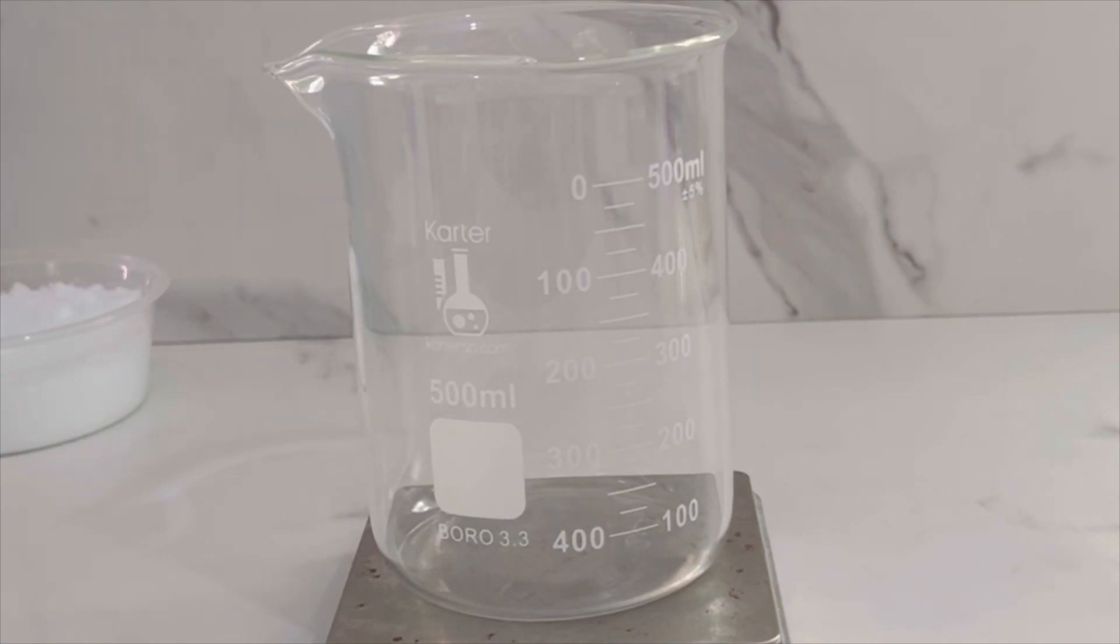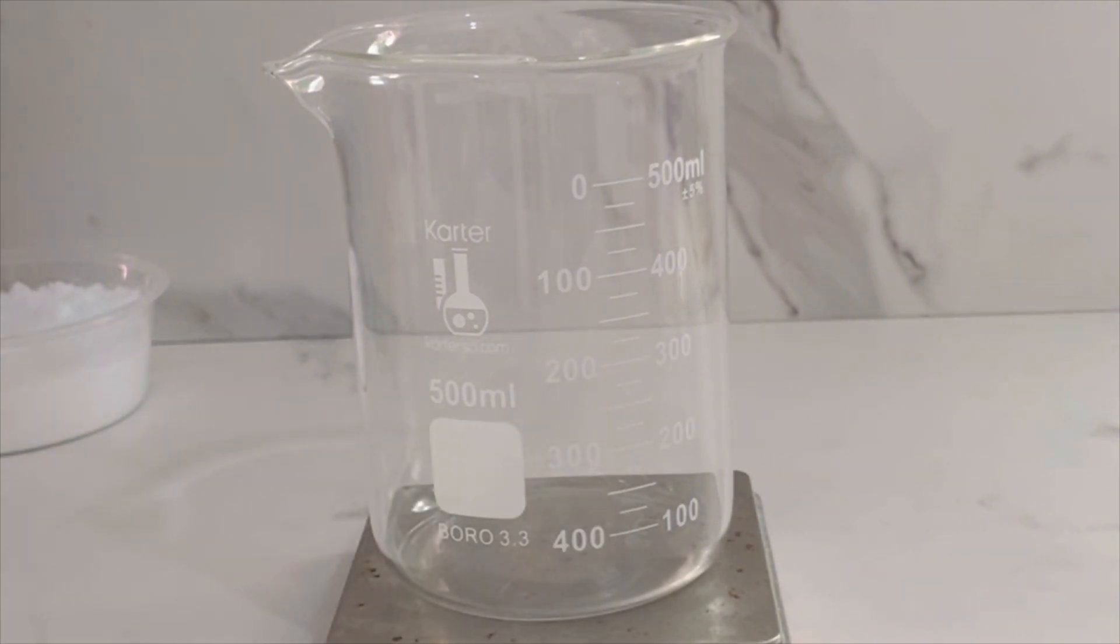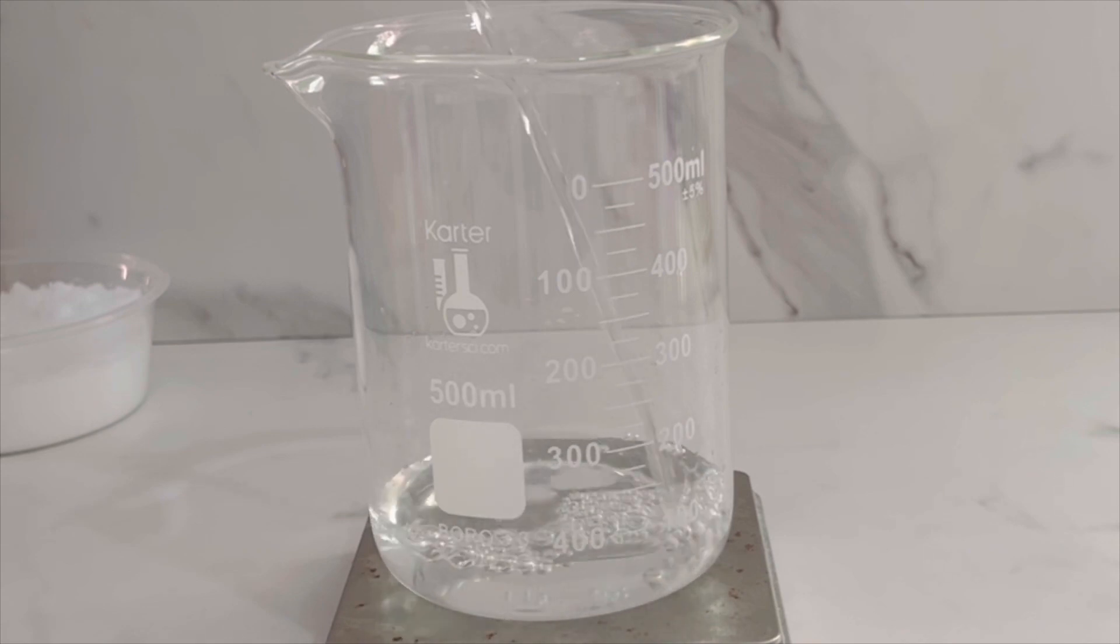So the first thing I'm going to do is work on my water amount, and this is distilled water. I'm doing a 10% pH buffer solution, so I will need 90% or 90 grams of distilled water, and this is what I'm here adding to my beaker.